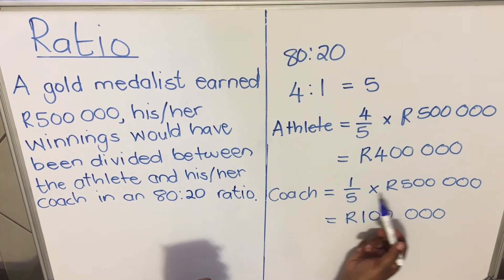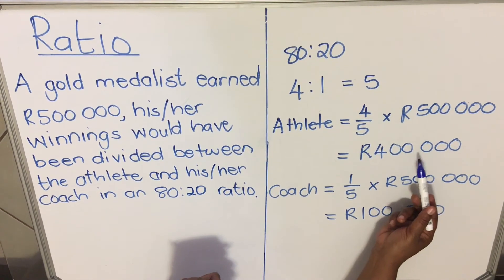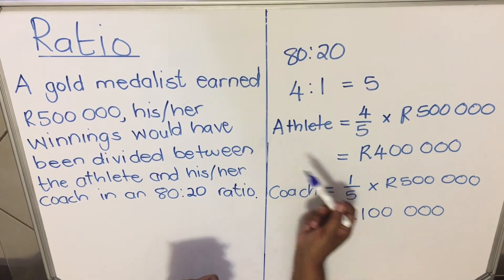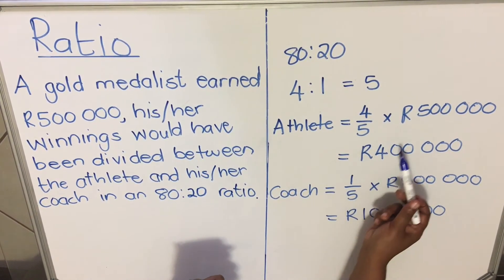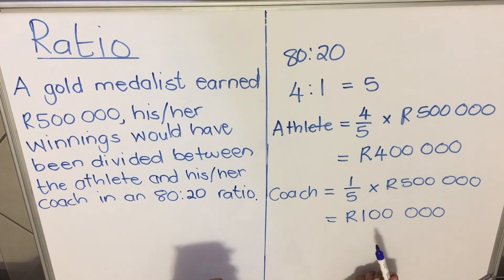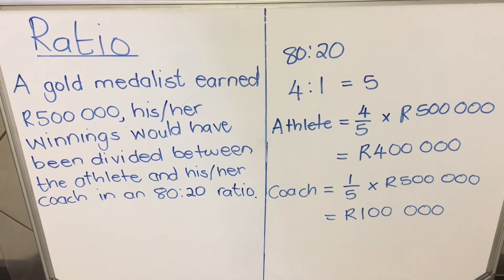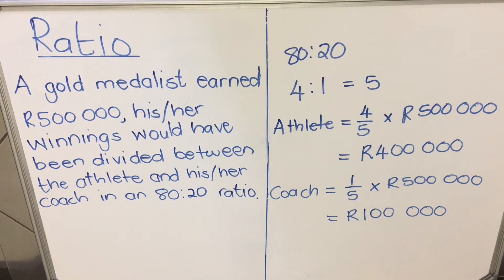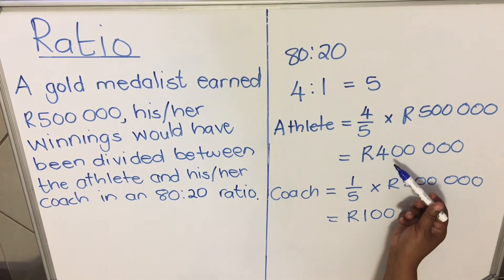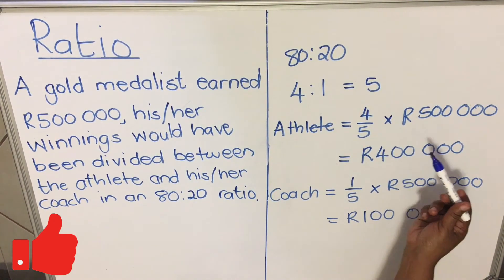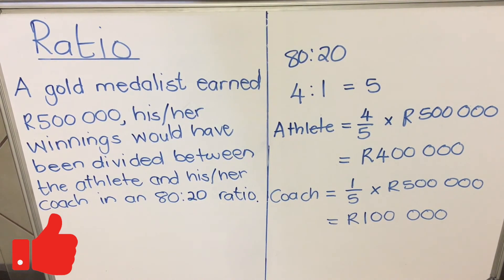We could have done this another way without using the formula: if the athlete gets 400,000, we subtract that from 500,000 and the remaining amount is for the coach. You also need to check your answer — these two numbers, when added together, must give you the total.